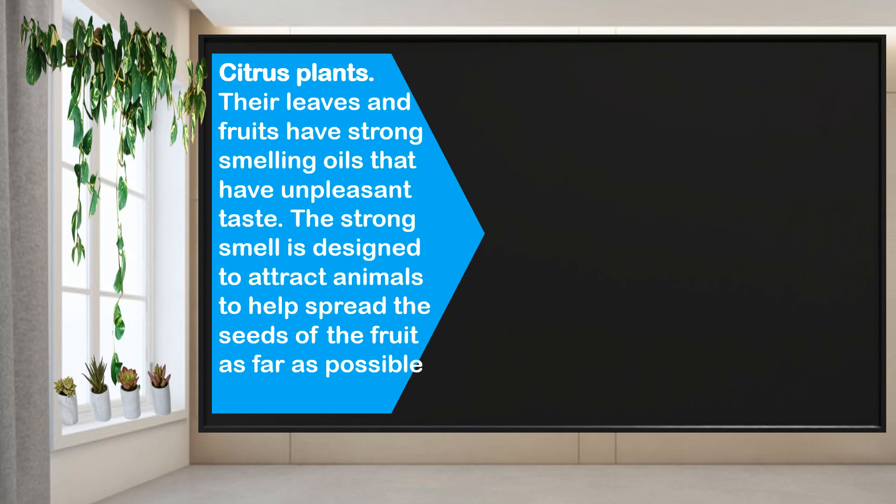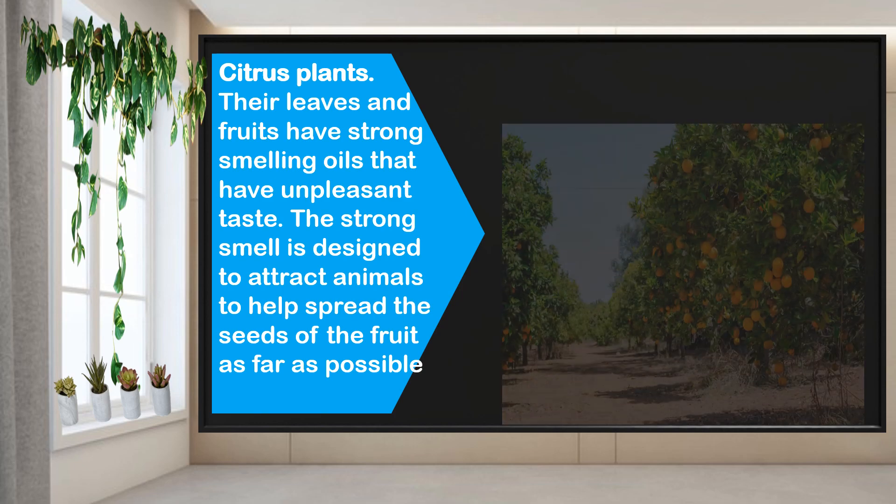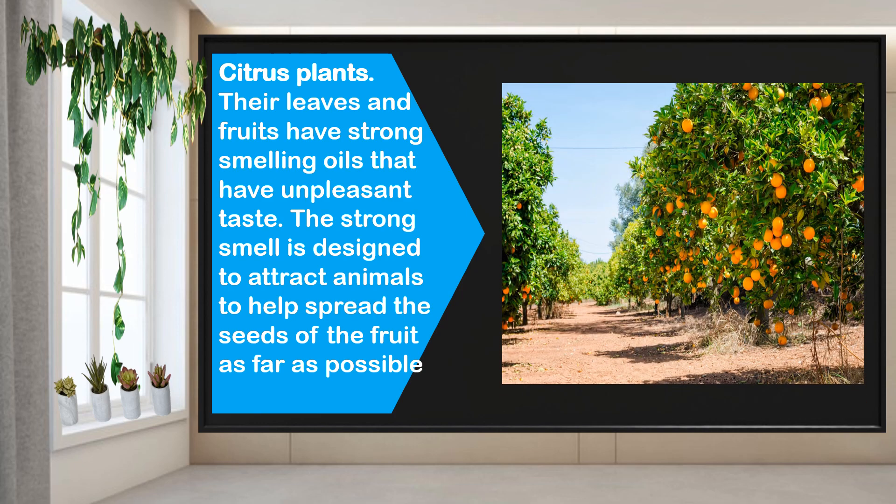Another one is citrus plants. Citrus plants have leaves and fruits which have strong-smelling oils that have an unpleasant taste. A strong smell is designed to attract animals or insects to help spread the seeds of the fruit as far as possible. That's why you'll notice there are plants sprouting even though you did not plant them.